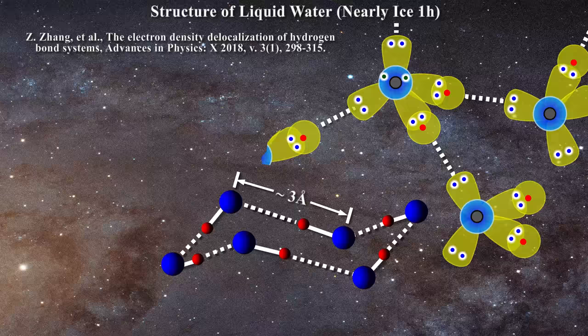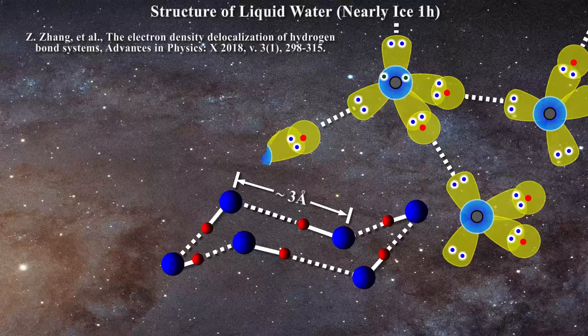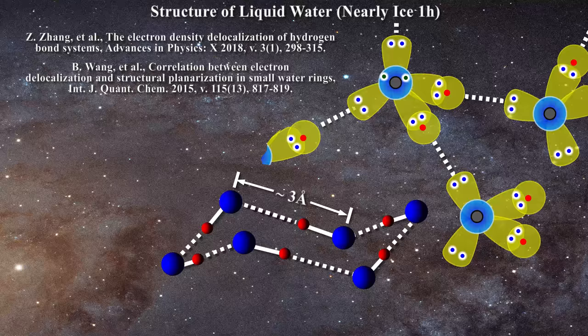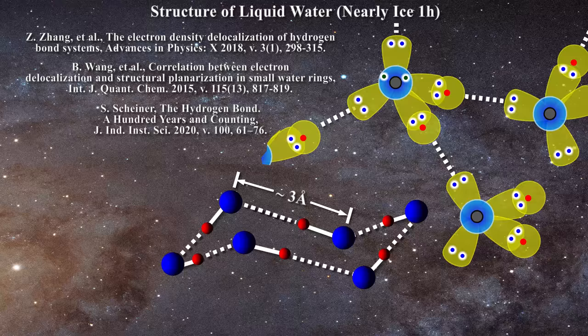In the end, electron pairs from the sp3 hybridized oxygen in one molecule are being delocalized into the hydrogen bond and interacting with the anti-bonding orbital of the hydrogen atom, as discussed in this review. This delocalization is important when we consider microwave and far infrared emission and absorption.